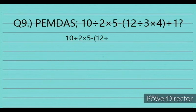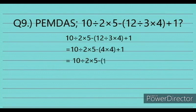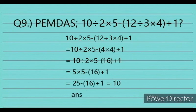Solution: Step by step — 10 divided by 2 times 5 minus (12 divided by 3 times 4 plus 1). Inside the parenthesis: 12 divided by 3 times 4 plus 1 equals 16 plus 1 equals 17. Then: 5 times 5 minus 17 equals 25 minus 17 equals 8. Wait — equals 10. The answer is letter A.